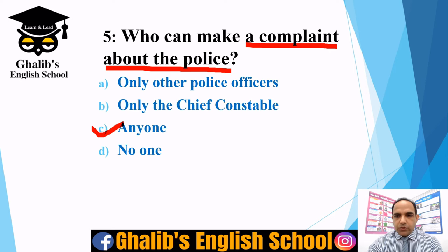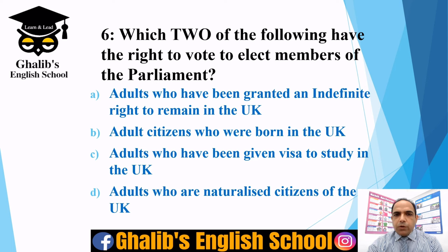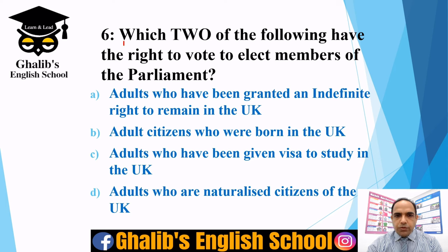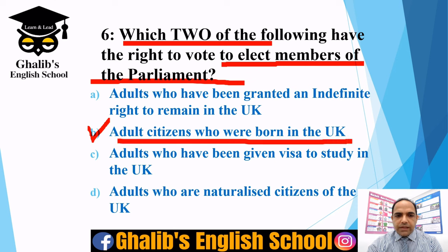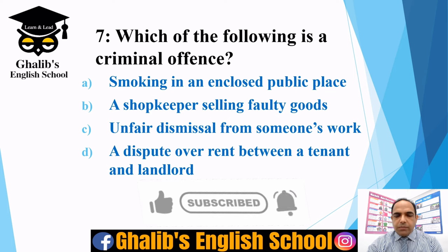Question six: which two of the following have the right to vote to elect members of Parliament? The options are: adults granted an indefinite right to remain in the UK, adult citizens born in the UK, adults given a visa to study in the UK, or adults who are naturalised citizens of the UK. You need to identify two correct options. The first is option B — born in this country — and the second is option D — those who have been naturalised.